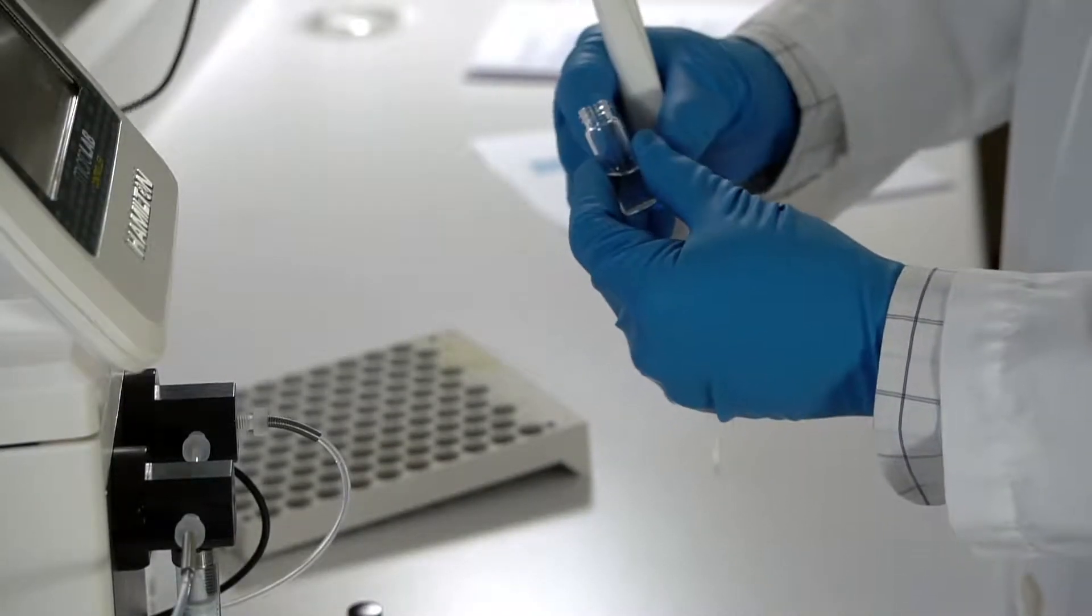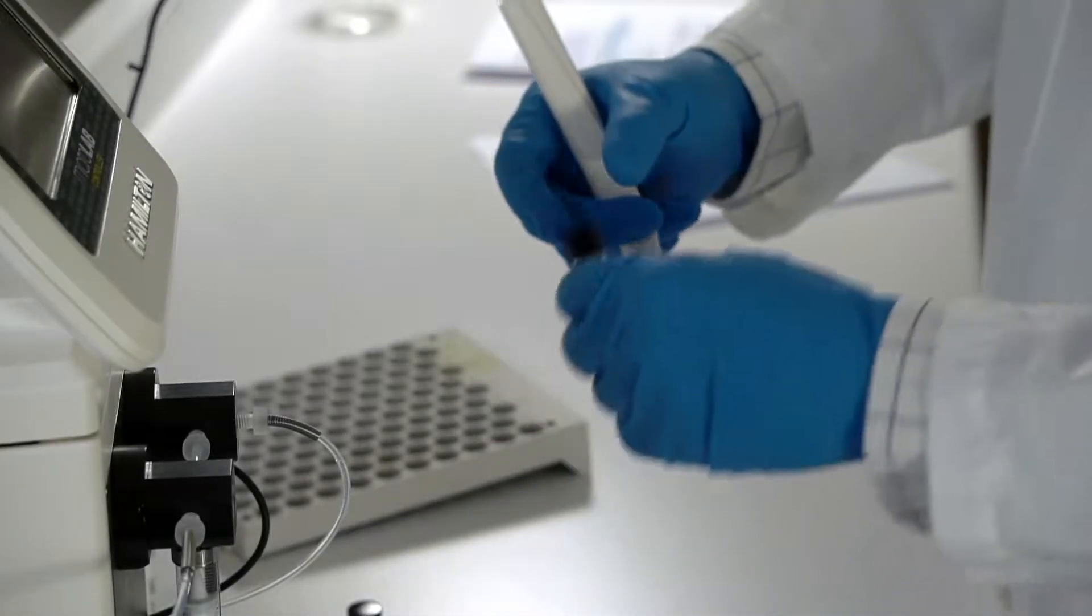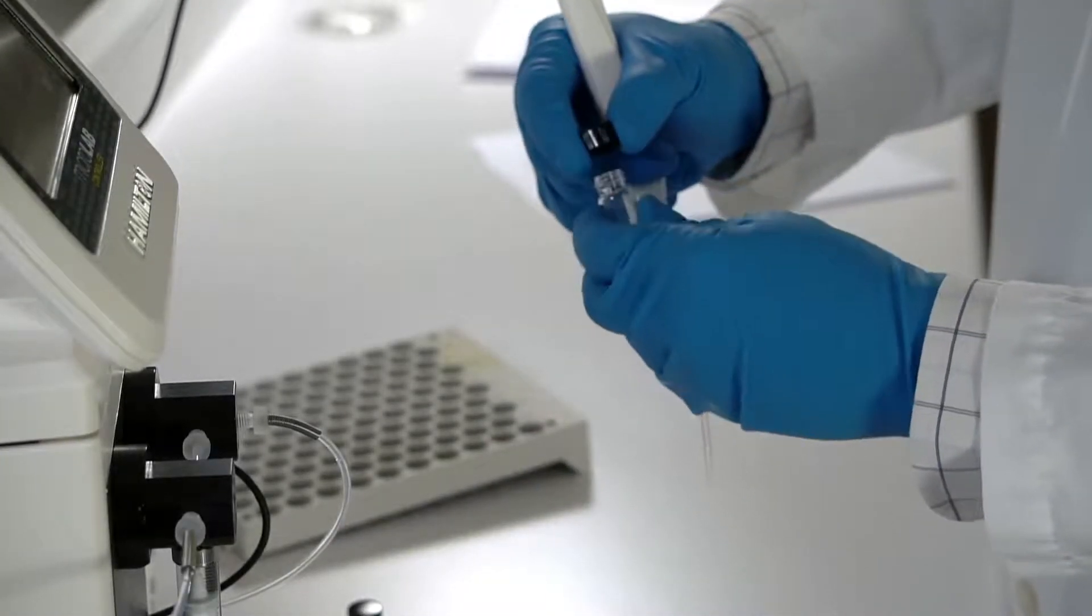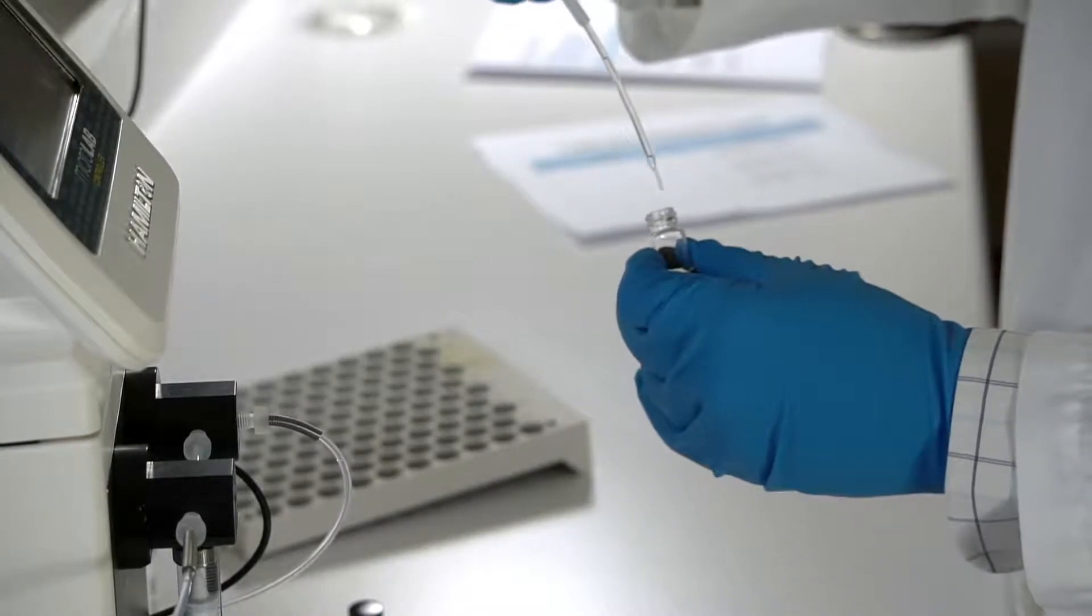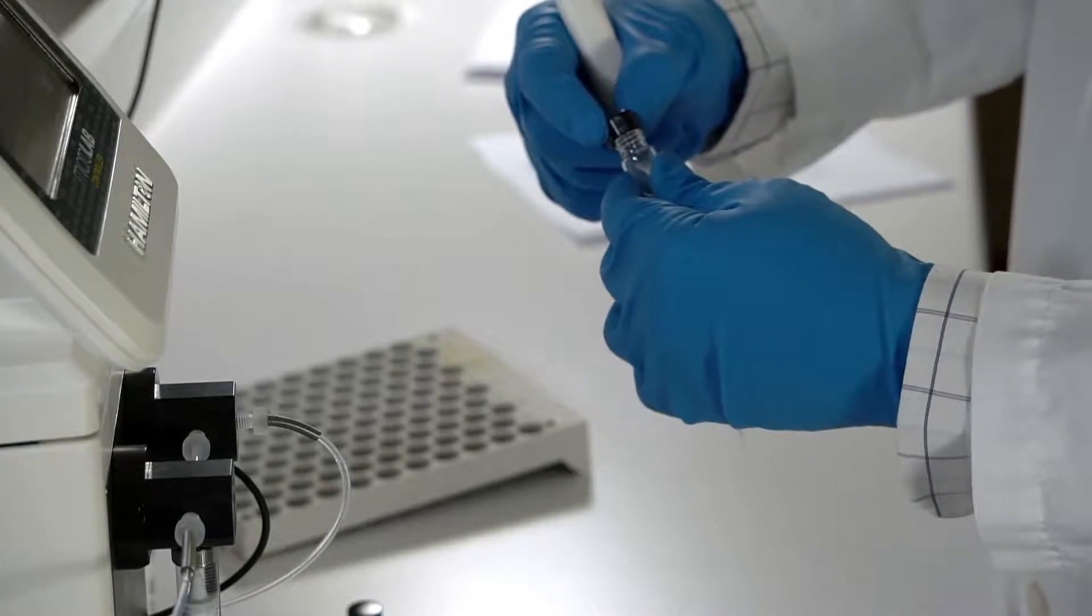Standards are separated in the tubing when the technician triggers the hand probe by adding an air gap between each aspiration. This prevents mixing before the standards are dispensed together. After adding the air gap, the technician proceeds to aspirate the next standard.